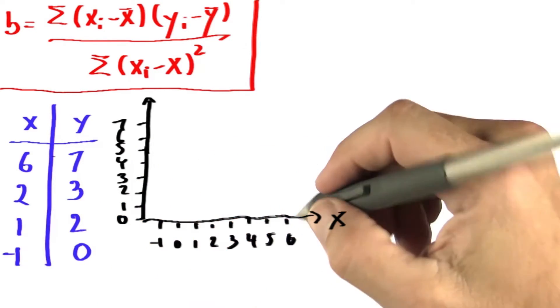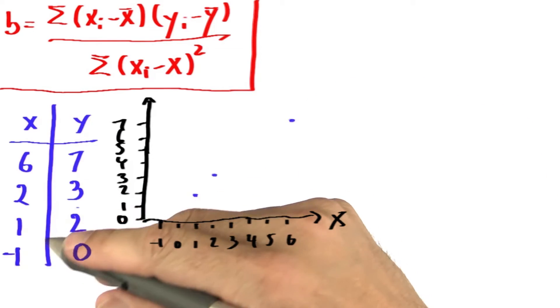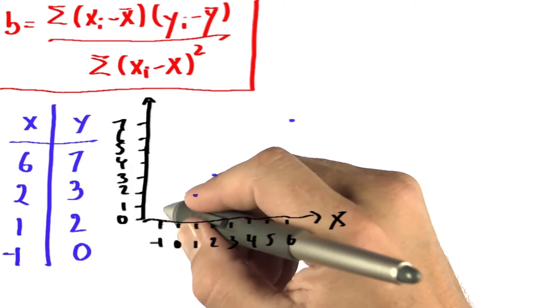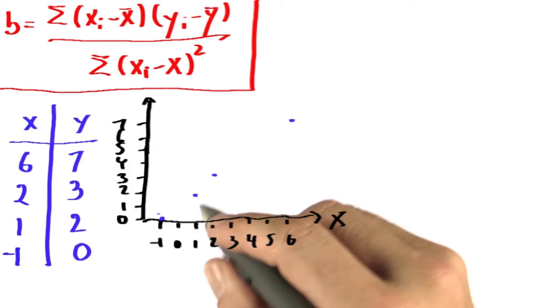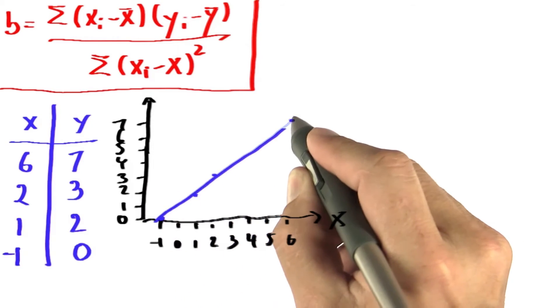And if I plot the data, 6 goes to 7, so it's just about here, 2 to 3, 1 to 2, and minus 1 to 0. So not surprisingly, this data is in fact linear.